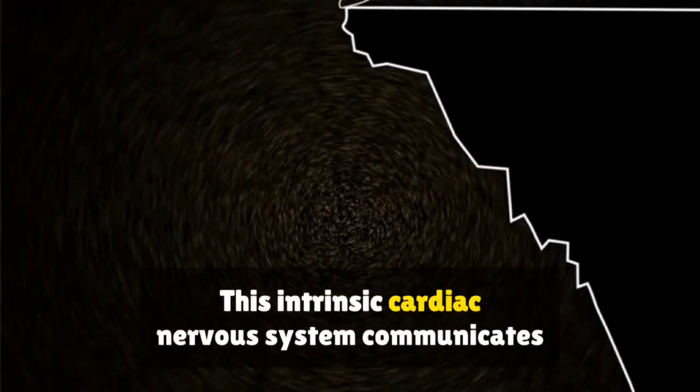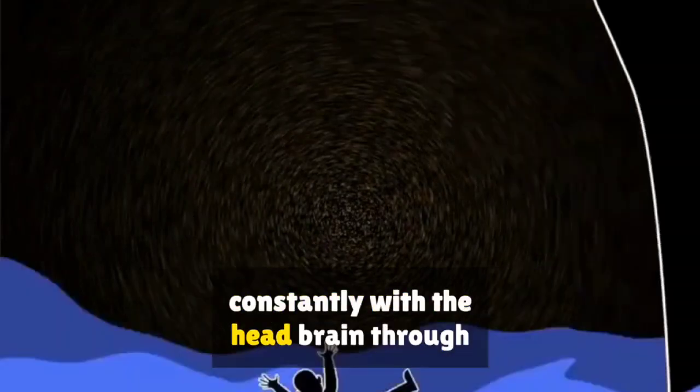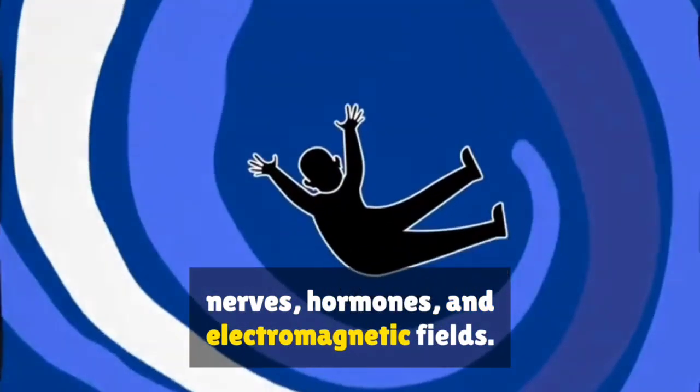This intrinsic cardiac nervous system communicates constantly with the head-brain through nerves, hormones, and electromagnetic fields.